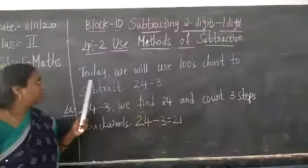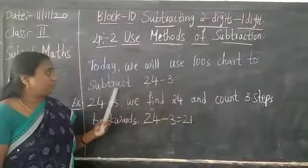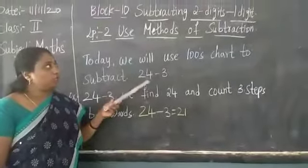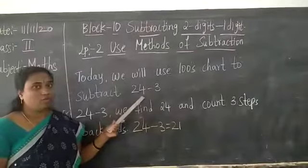Today we will use 100 chart to subtract 24 minus 3. We are using subtraction method, so the sum is 24 minus 3.